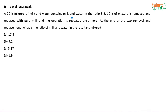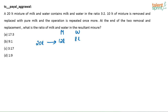A 20-liter mixture of milk and water contains milk and water in the ratio 3:2. So in 20 liters, how much is milk and how much is water? 3:2 — that is 3/5 of 20, which is 12 liters of milk, and how many liters is water?